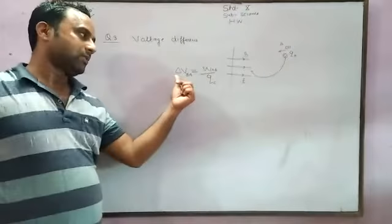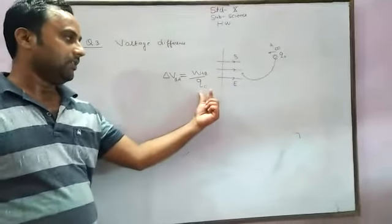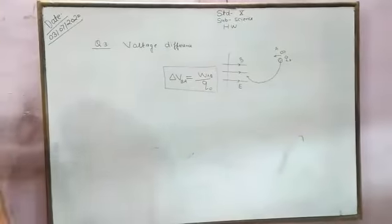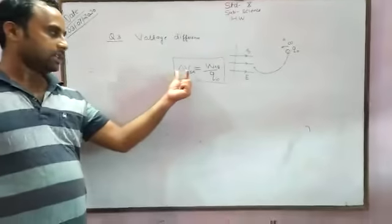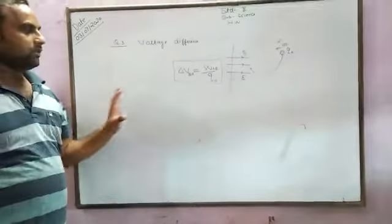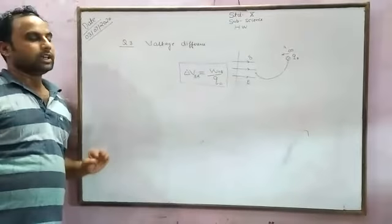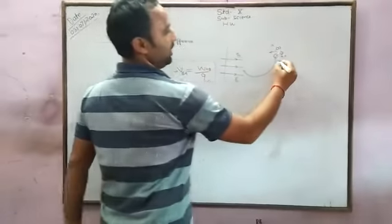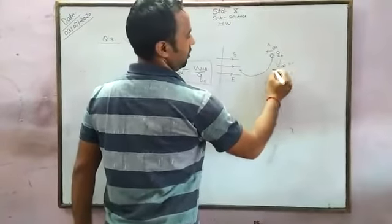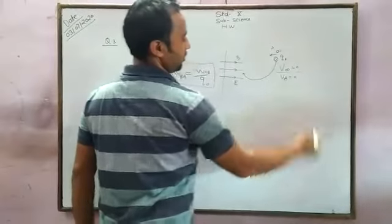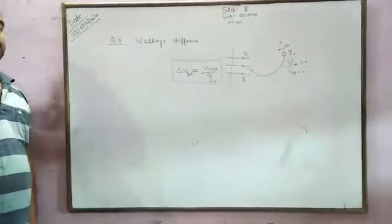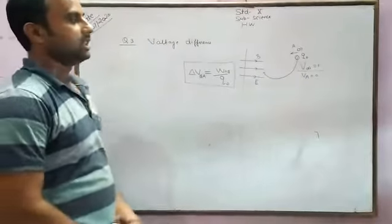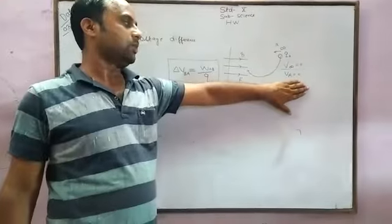We can say that change in potential difference of B to A is equal to work done from A to B divided by test charge. This physical quantity is always measured as a difference because the absolute value of the potential cannot be determined. Here we can take a reference point from infinity and we can say that V infinity is taken to 0. It means potential at A is equal to 0. Infinity is the difference limit of our measurement, and hence we can say that this is the reference point where the potential is 0.